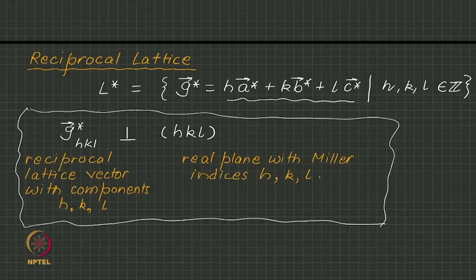In the last lecture we saw an important property of the reciprocal lattice: the reciprocal lattice vector g*_hkl is perpendicular to the real lattice plane hkl.